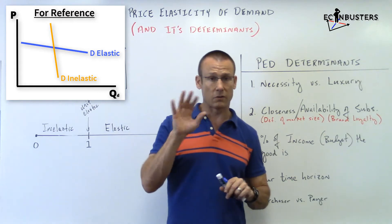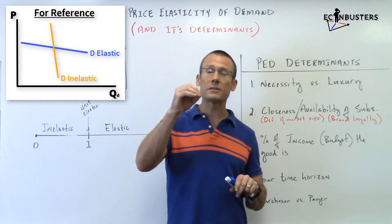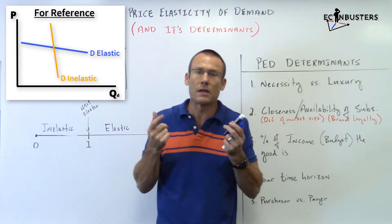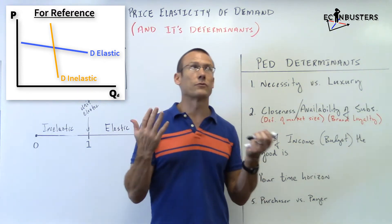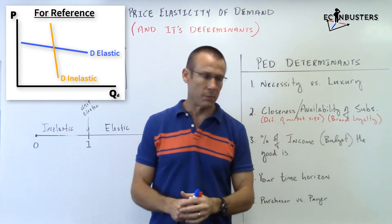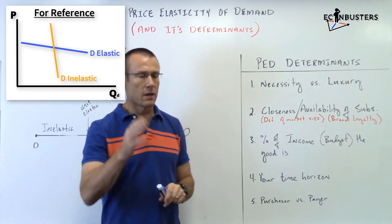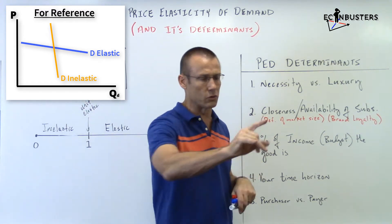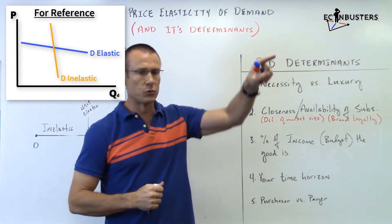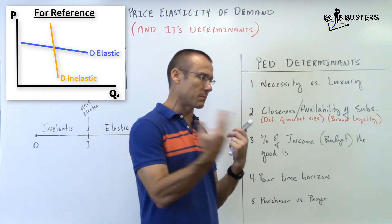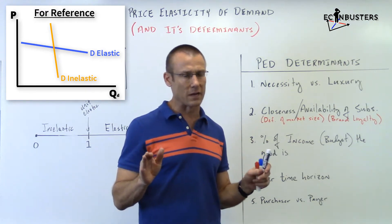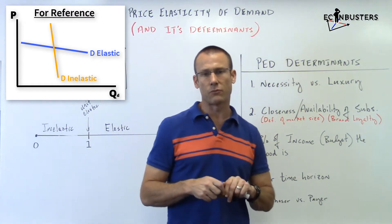The next determinant is the net percent of income or budget the good represents. This one trips students up. If it's a small percent of your budget, you're actually inelastic. Example: bubble gum costs two cents; the manager changes it to four cents — that's a 100% price change, but it won't break you. It's a tiny part of your budget, so you still buy it. Small percent of budget means inelastic.